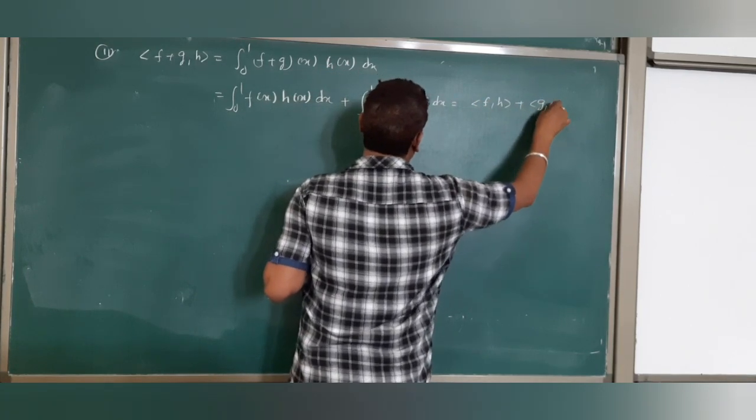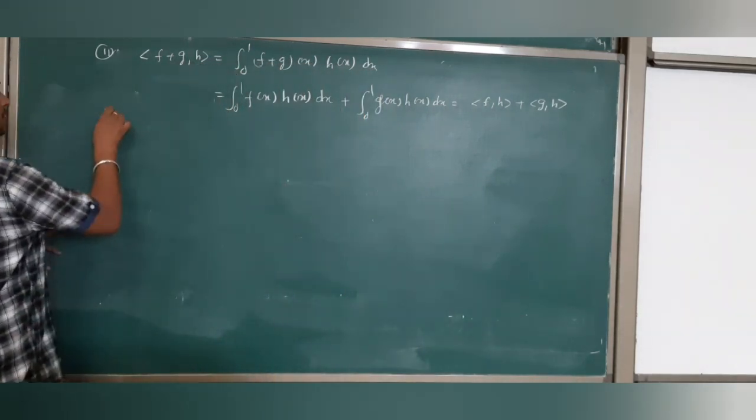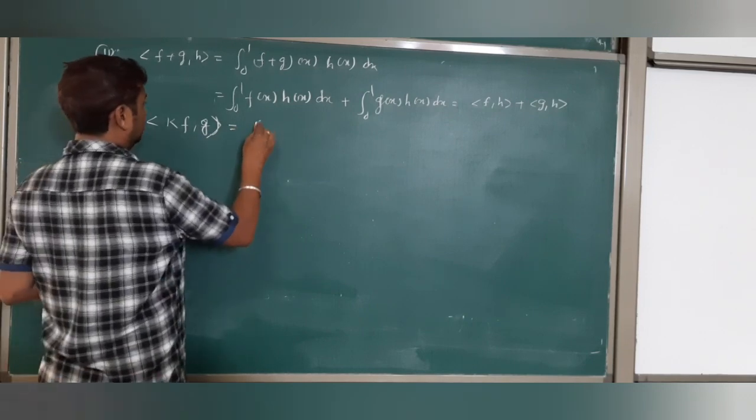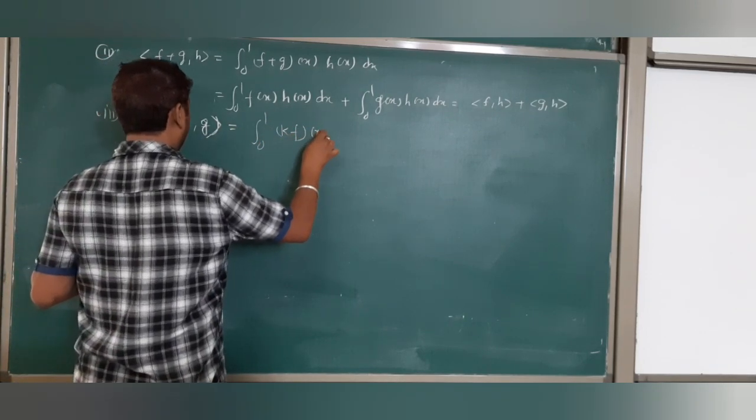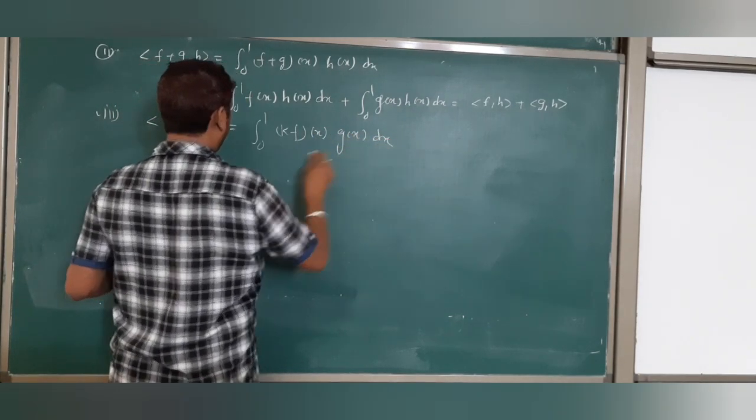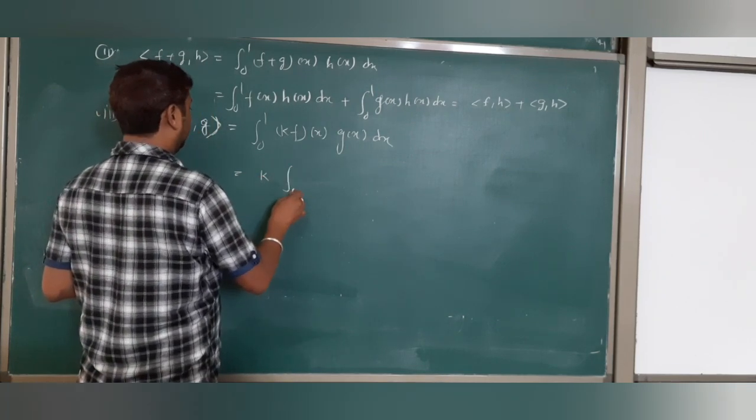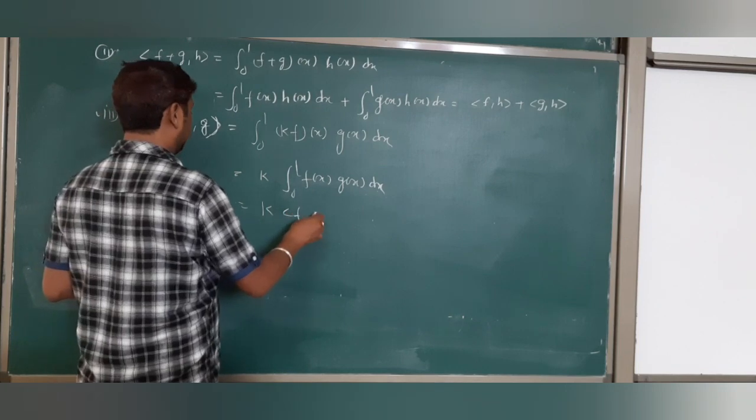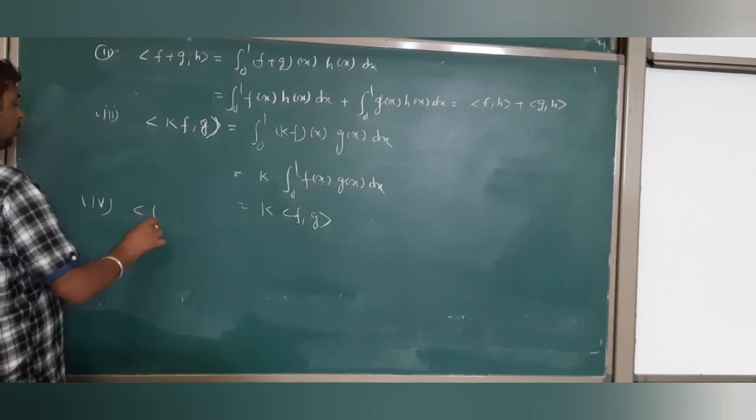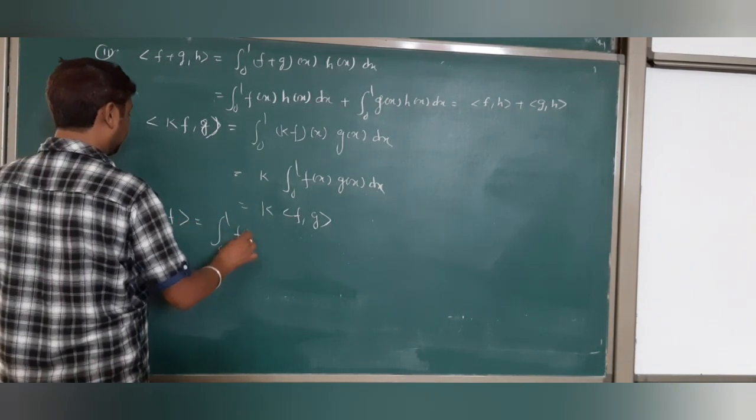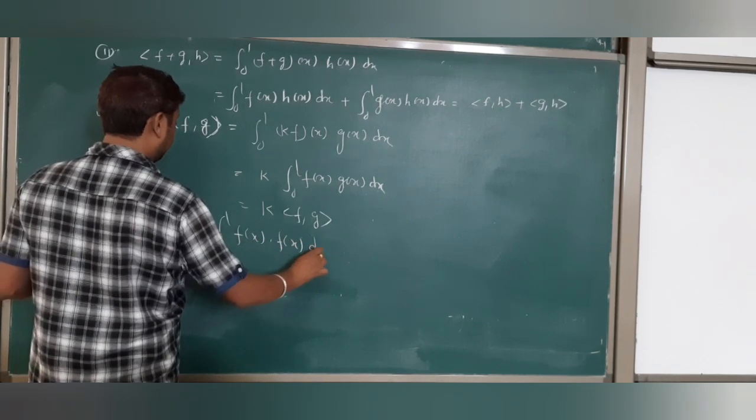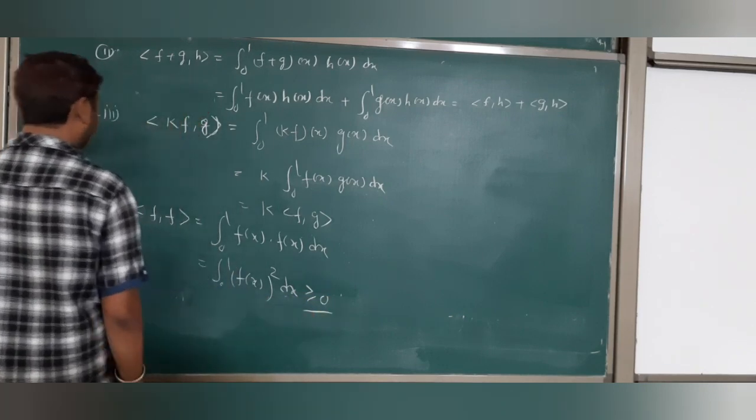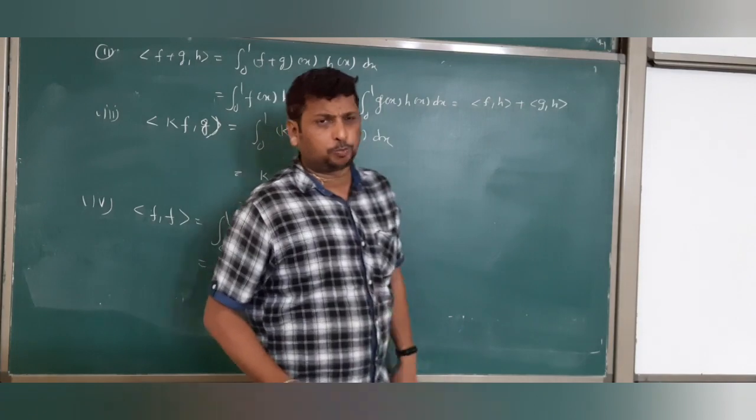Which equals inner product f, h plus inner product g, h. Third property: k comes outside from property of integrals. And fourth: integral 0 to 1 f(x)²dx equals 0 only if f equals 0. So it is easy to prove this is inner product space.